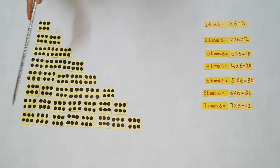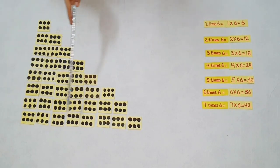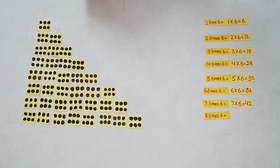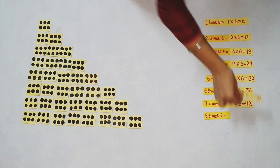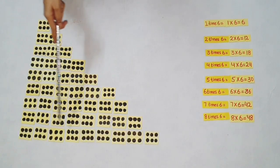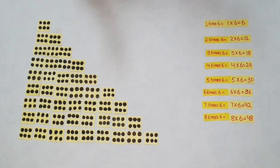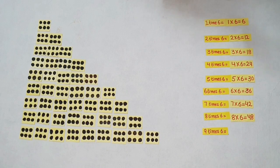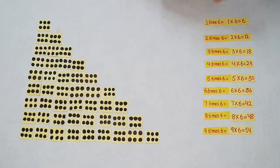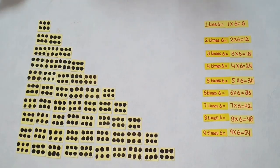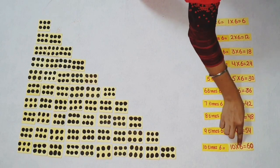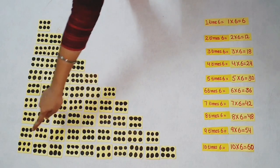42 dots. Students, how many groups are there? Yes, there are eight groups of 6 dots. 8 times 6 is equal to 8 into 6 is equal to 48 dots. There are nine groups of 6 dots. 9 times 6 is equal to 9 into 6 is equal to 54 dots. There are 10 groups of 6 dots. 10 times 6 is equal to 60.